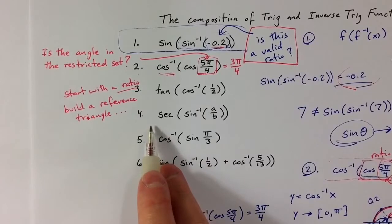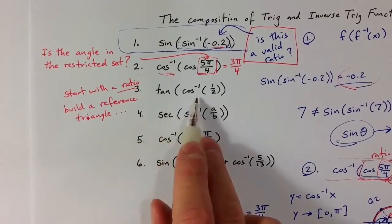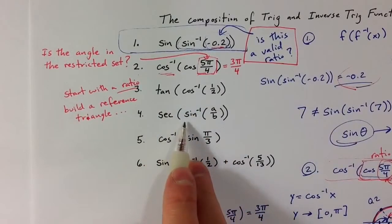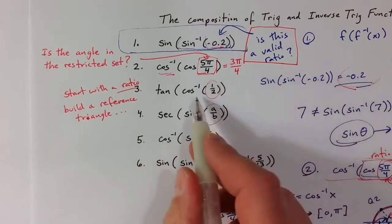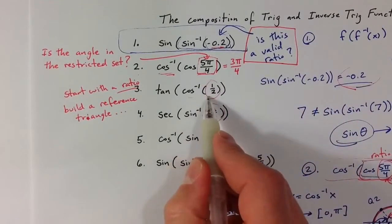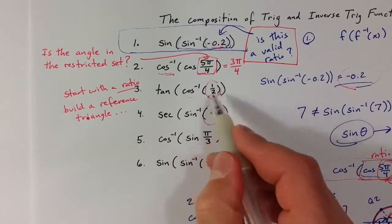For problems 3 and 4, the trig function and the inverse trig function didn't match. But we started inside here, we started with a ratio. The inverse trig function was the one inside. So this is a ratio, 1 half. This is a ratio.